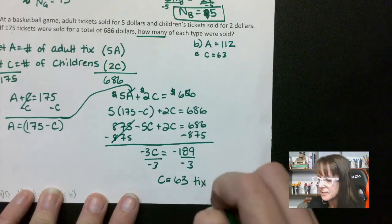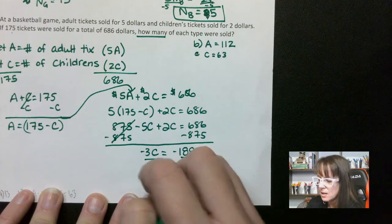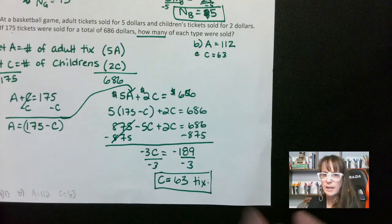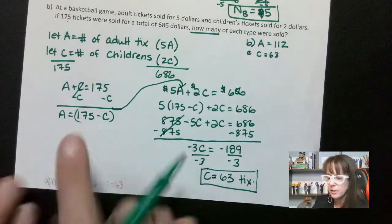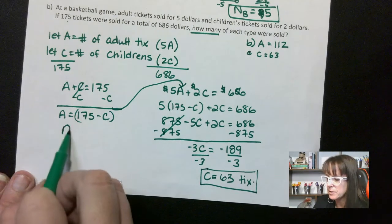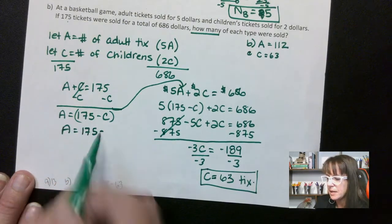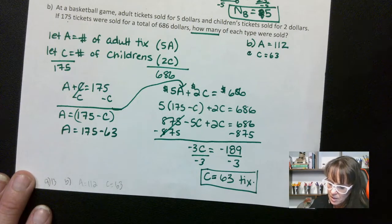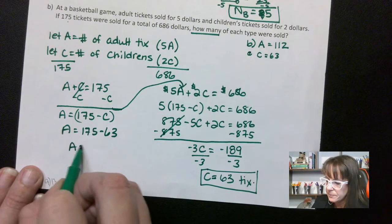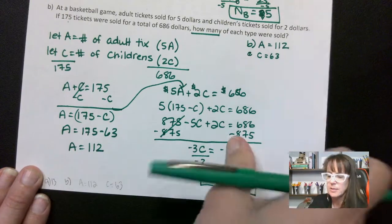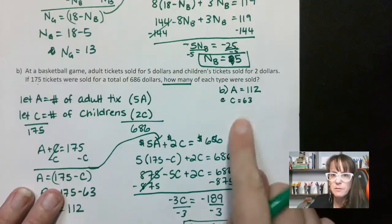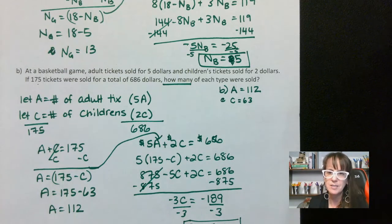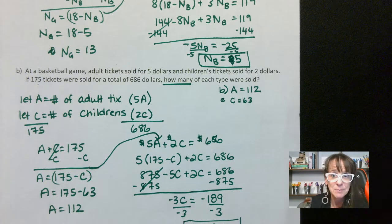The number of children's tickets is 63, which means adult tickets equal 175 minus 63, which gives us 112. And that's what we said we should have — excellent job. If you have any questions, leave them down below. Otherwise I will see you next time. Thanks so much.